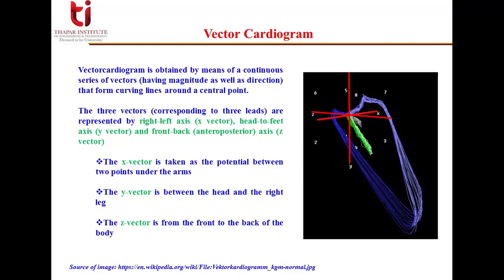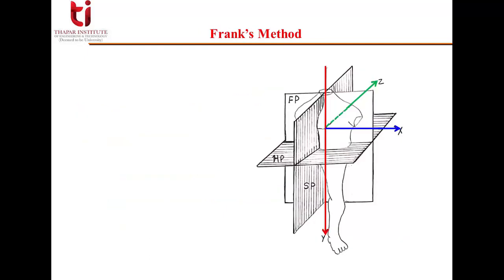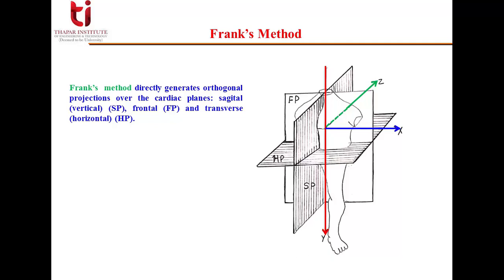Now, let's see how Frank's method is used to determine the three vectors. Frank's method directly generates orthogonal projections over the cardiac planes, i.e., the sagittal plane or vertical plane.